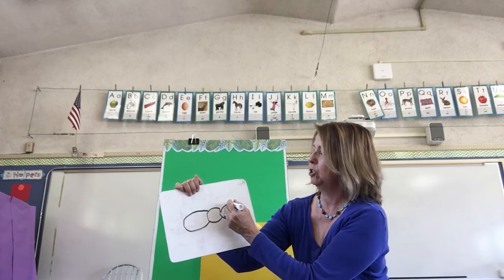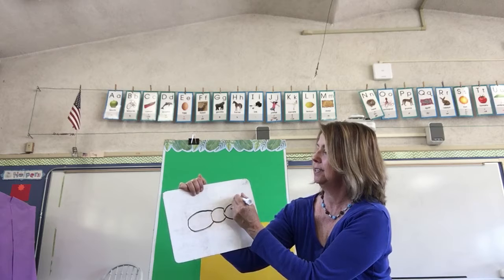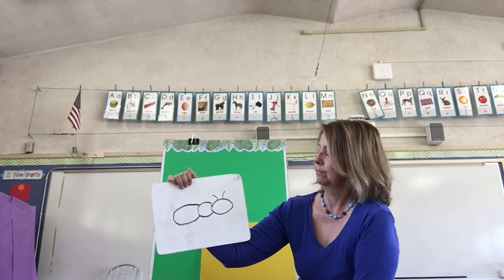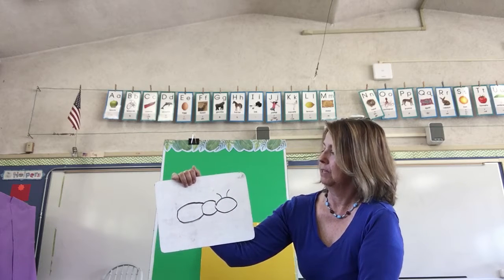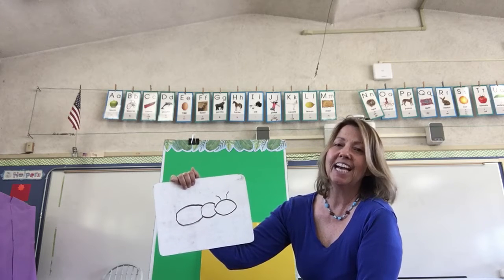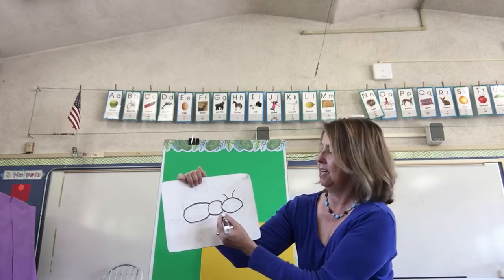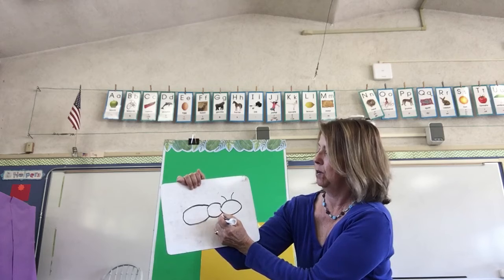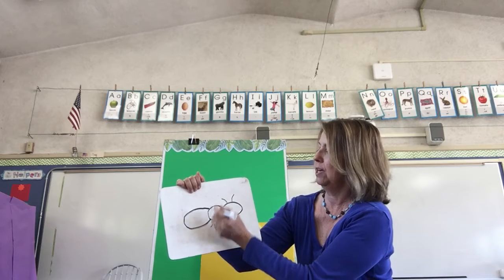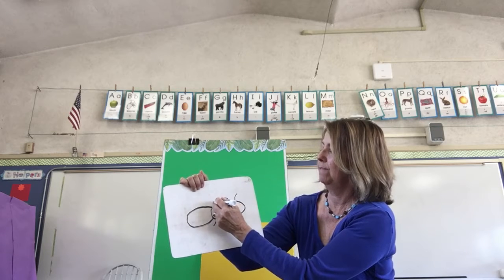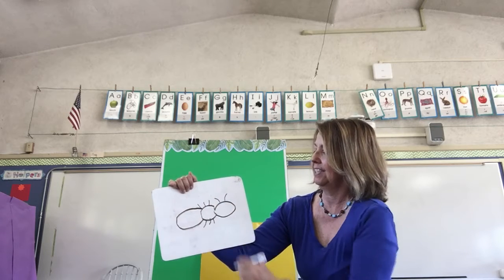Two antennas. Six legs — one, two, three, four, five, six.